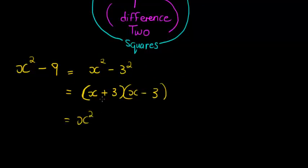For the middle term, we add these two together, but plus three and minus three is just zero, so there's no middle term. And for the final term, the constant term, we just multiply the two, and multiplying that would give me negative nine. That's what I had.